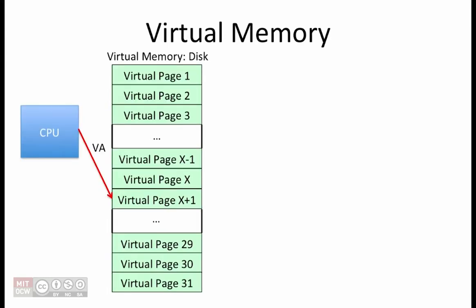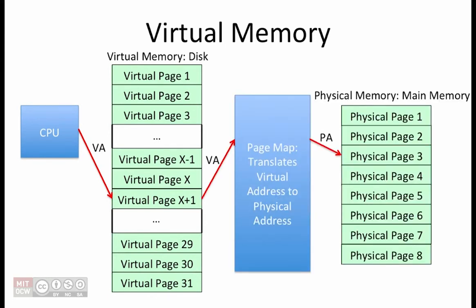Virtual memory allows programs to behave as if they have a larger memory than they actually do. The way this works is by using virtual addresses, which refer to addresses on disk, in our programs. The virtual addresses are translated into physical addresses using the page map, which is a lookup table that has one entry per virtual page. The page map knows whether the virtual page is in physical memory and, if so, it immediately returns the physical page number. If the page is not in physical memory, then this causes a fault, which means that the virtual page must be brought in from disk to physical memory before it can be accessed.